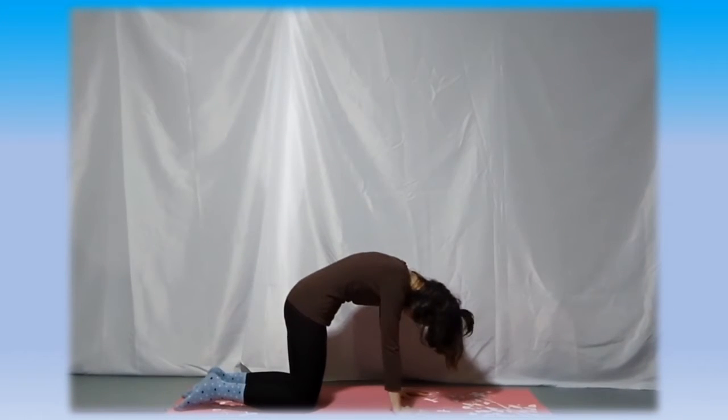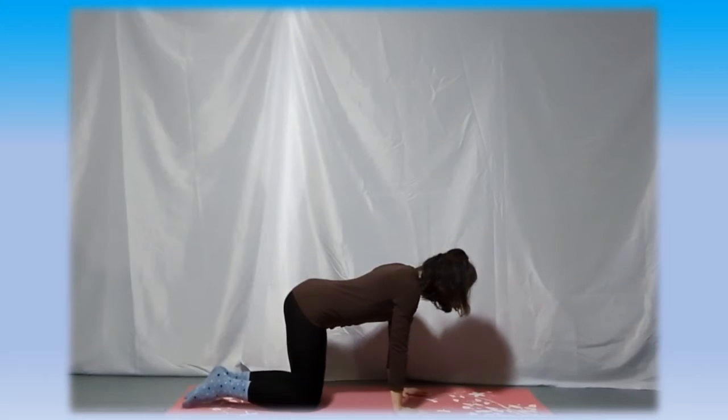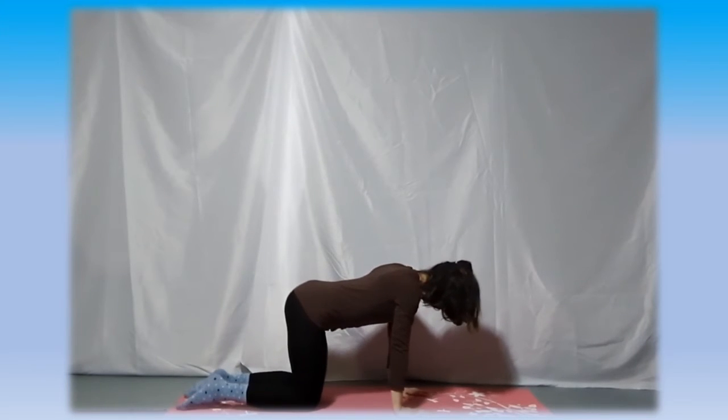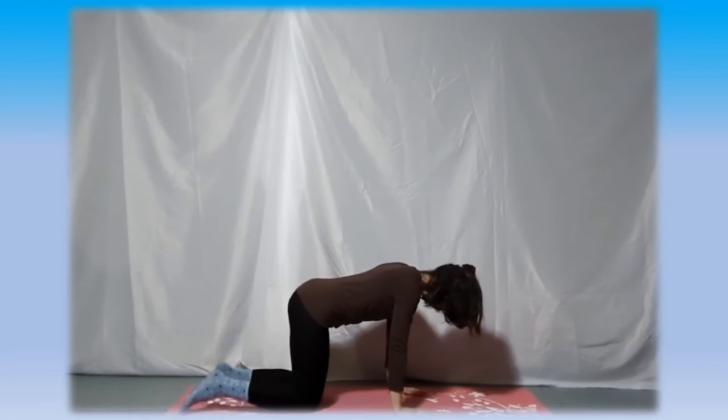We will now try some plank variations. Level 0: Stay in tabletop. You can experiment with lifting the knees off the ground, making sure your belly is in to support the lower back.